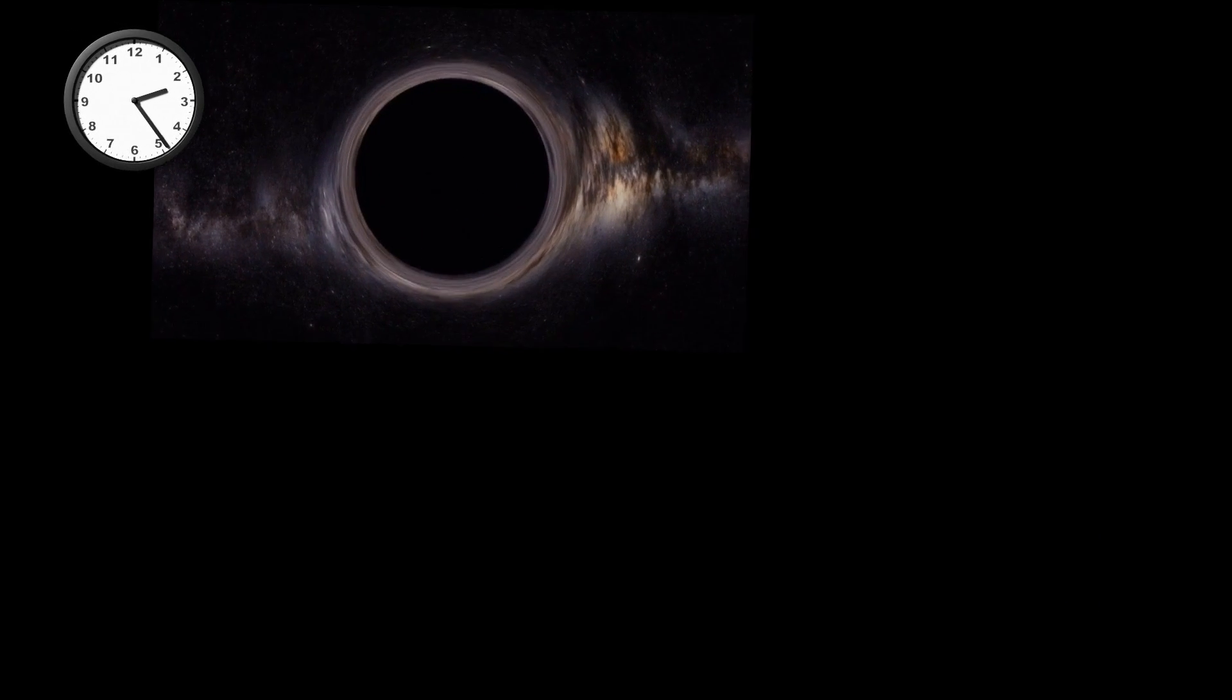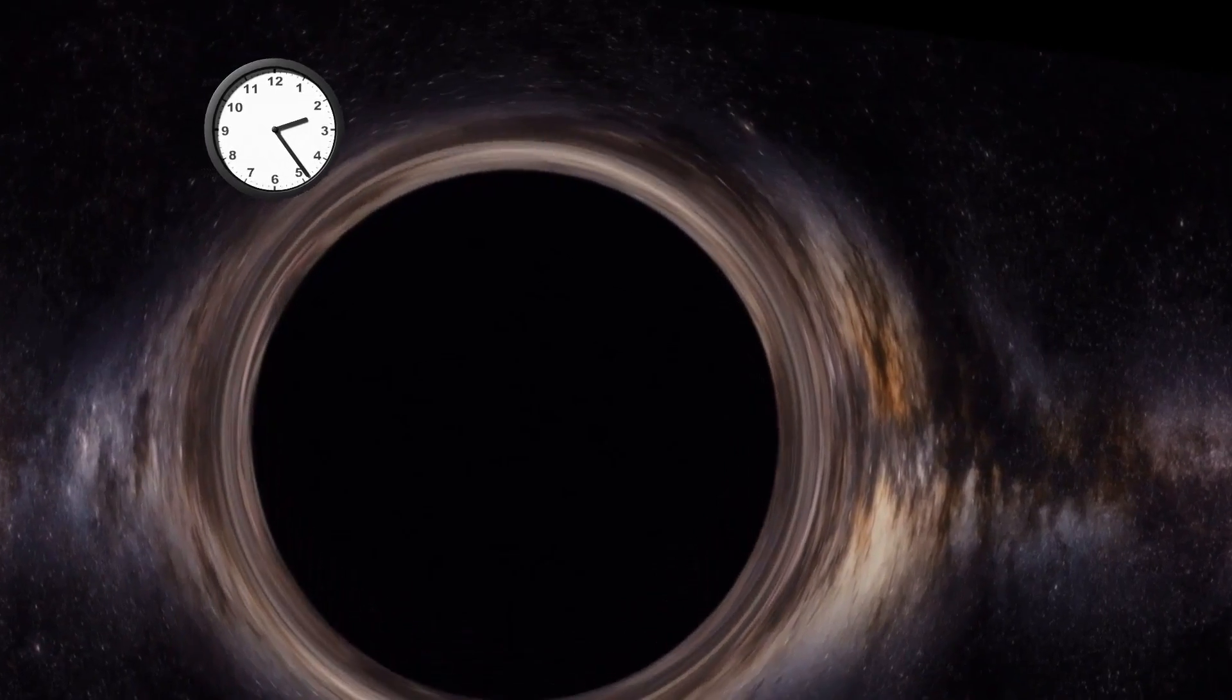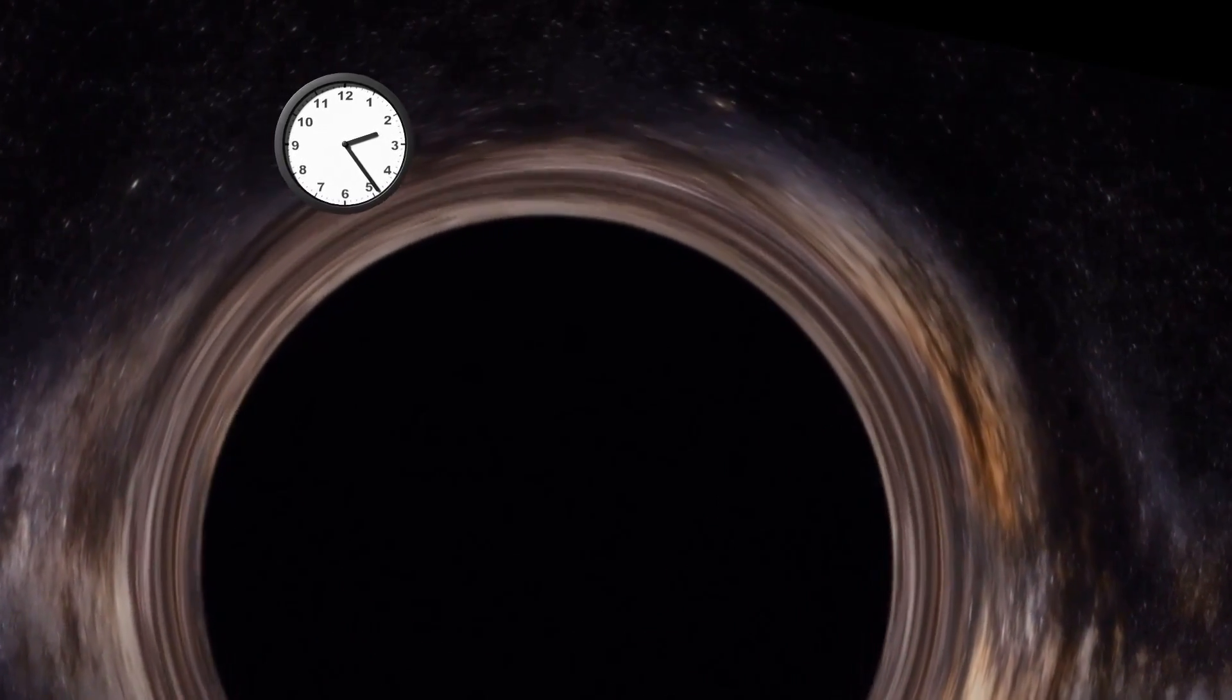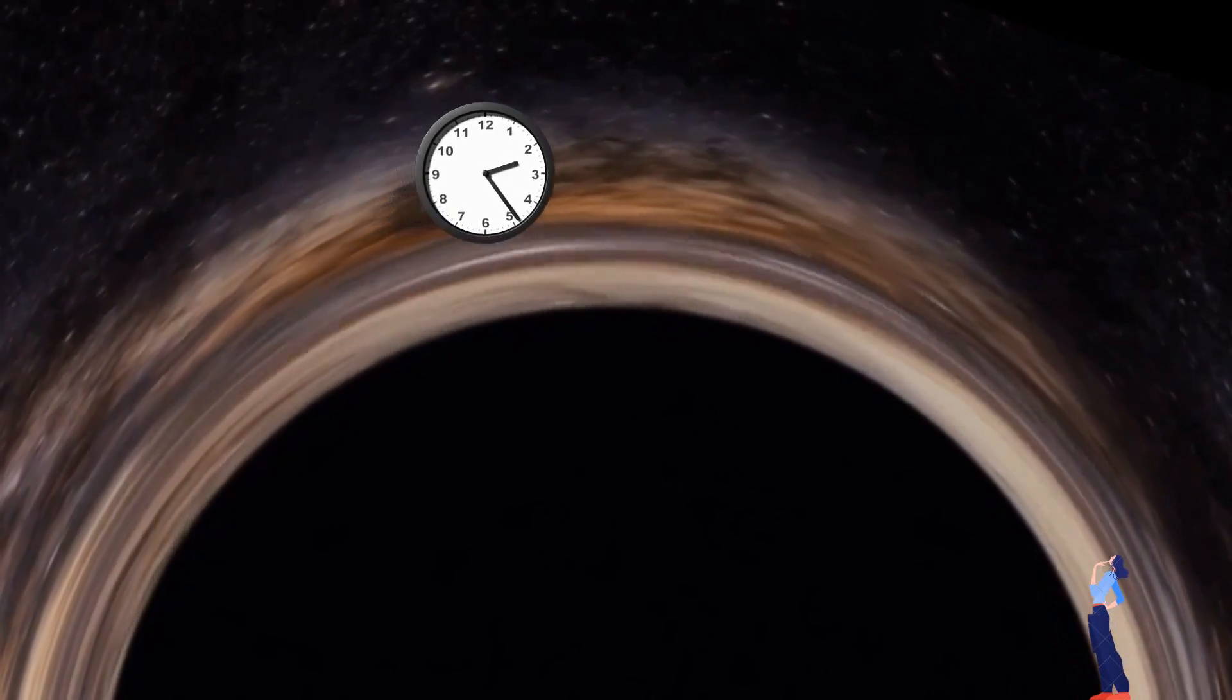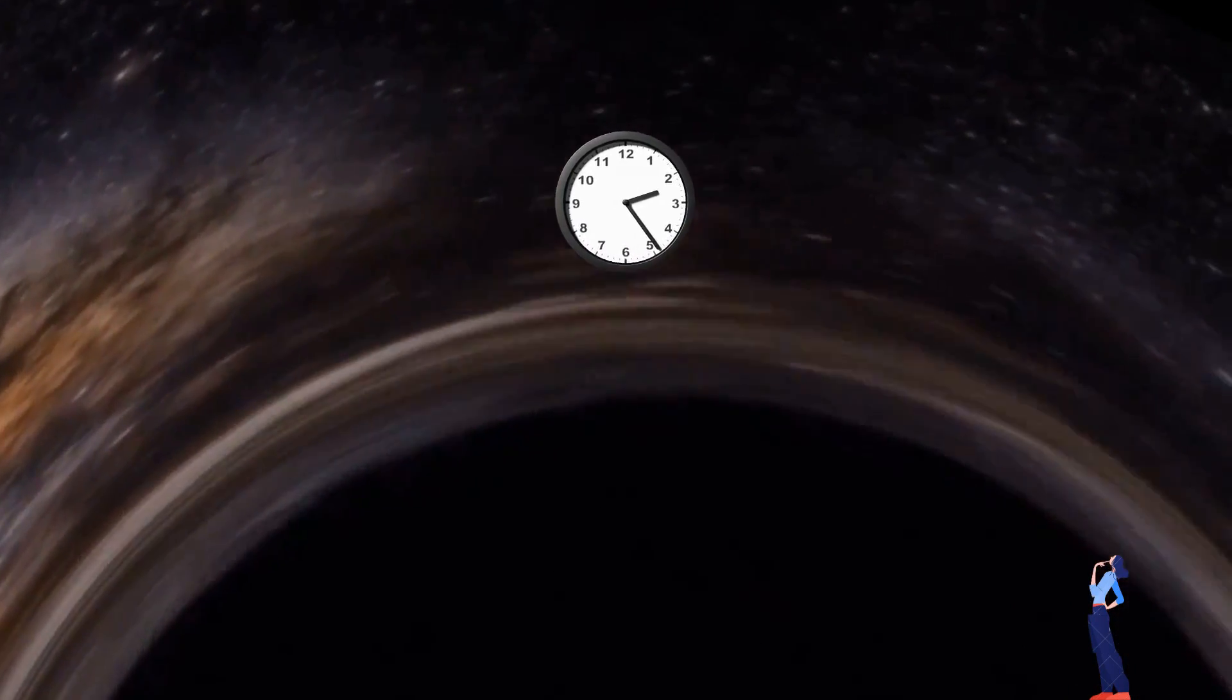What will happen if you put a clock at the event horizon of a black hole? You will notice that the clock will start slowing down as it comes near the event horizon. And when the clock reaches exactly at the event horizon, it will stop to the observer far away.